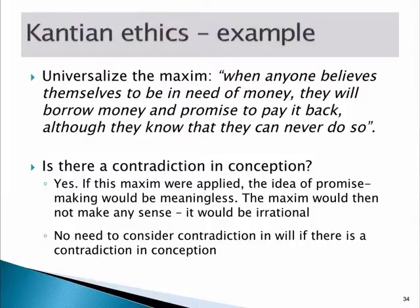To universalise means taking the specific and making it general — not about you, but about anyone. So: 'When anyone believes they need money, they'll borrow it and promise to pay it back, although they know they can never do so.' Now the question becomes: is there a contradiction in conception or a contradiction in will? Does this meet the test of universality?